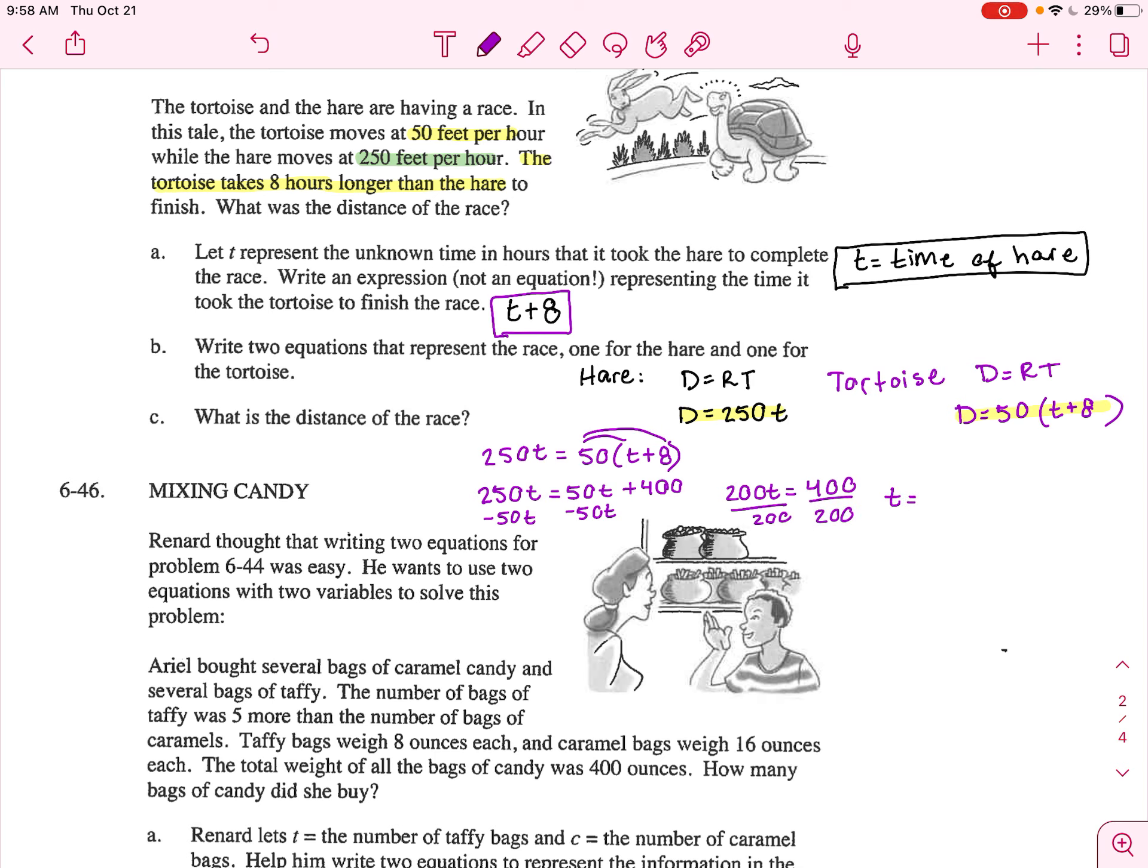Divide by 200. The time of the race equals two. And that's the time of the hare.